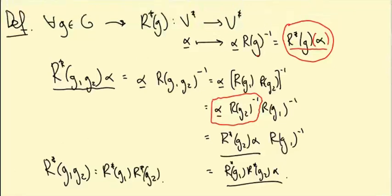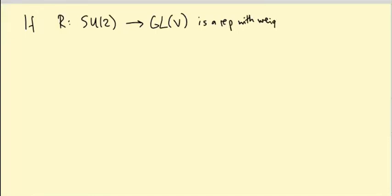Okay so I just want to prove some nice properties of the dual and work out some examples now. So first if R is a representation of SU(2) on some complex vector space V with a given weight diagram,